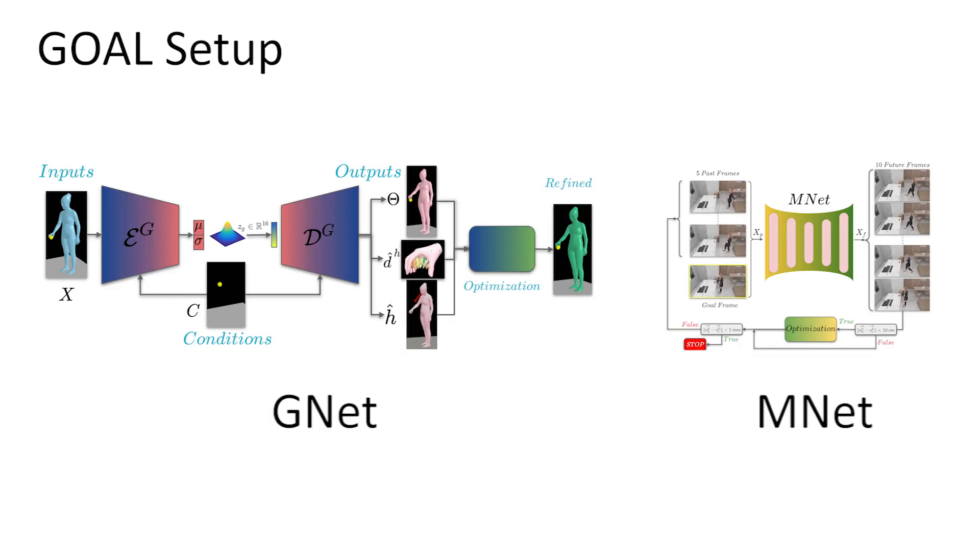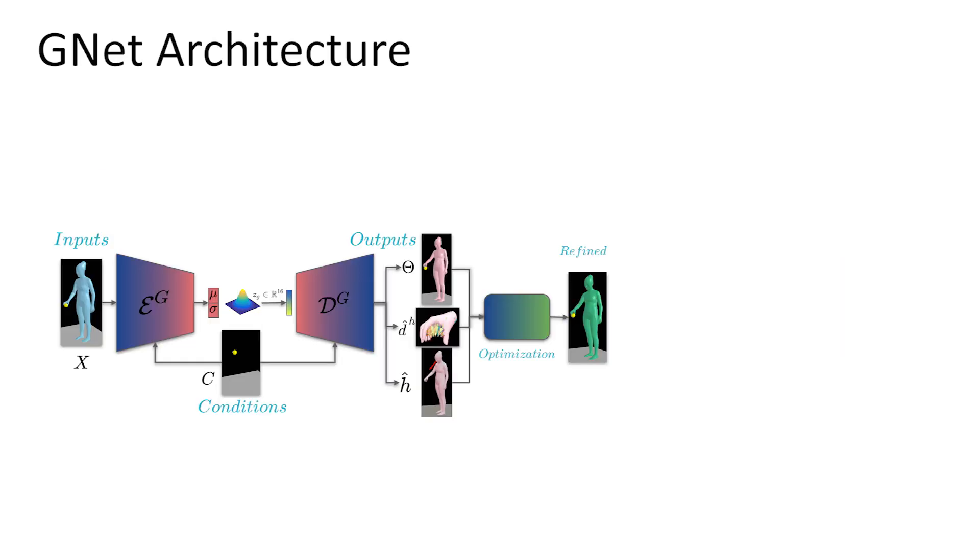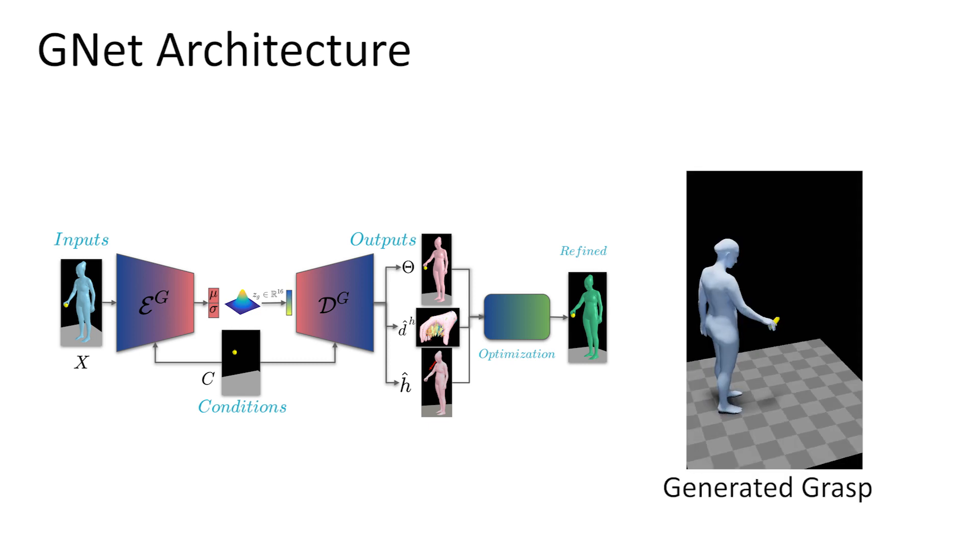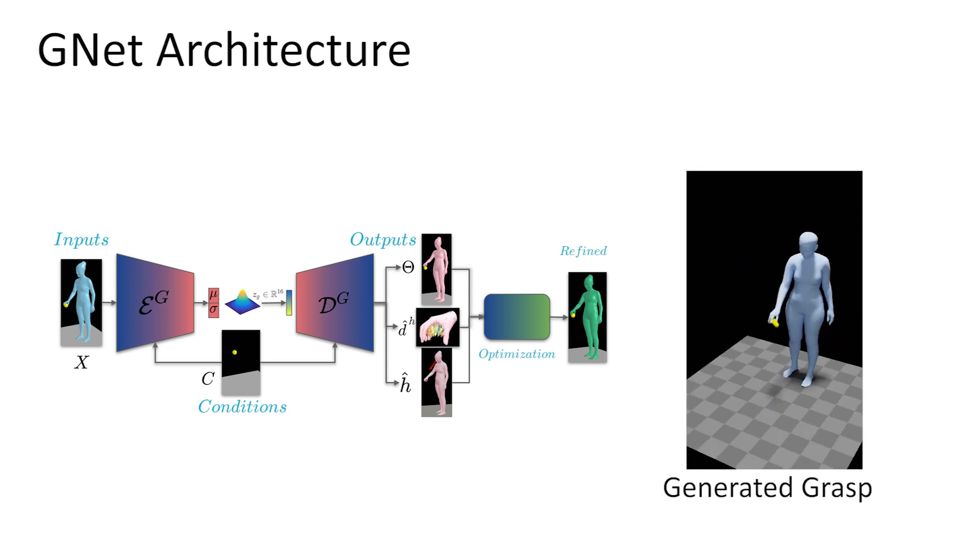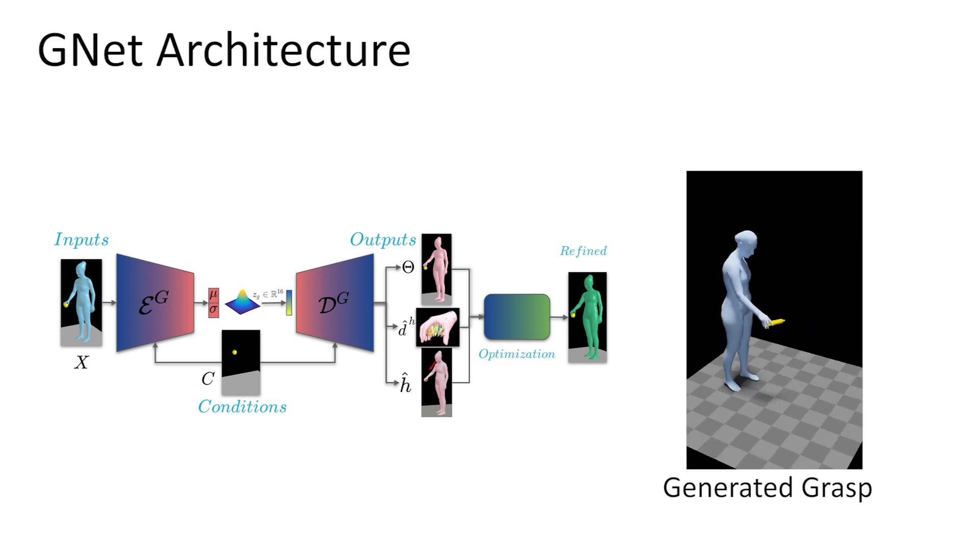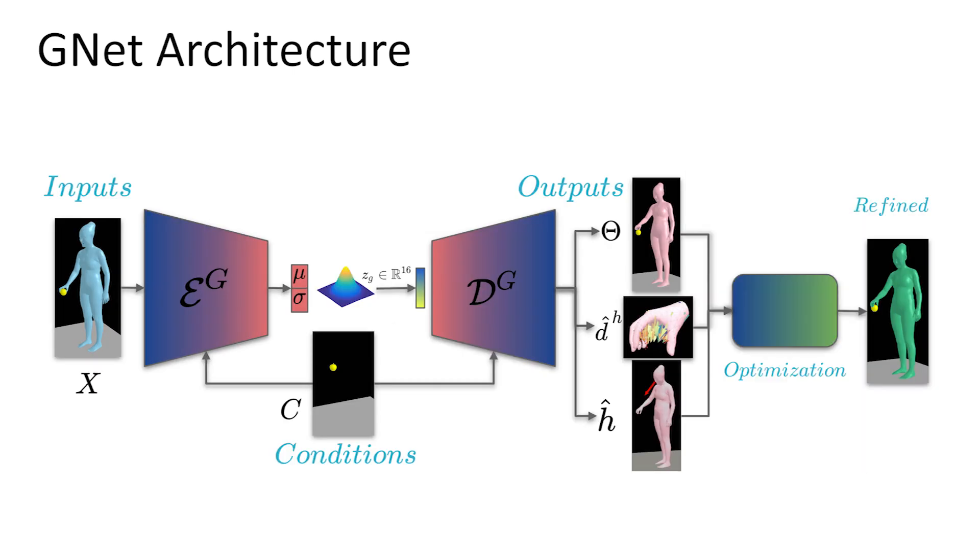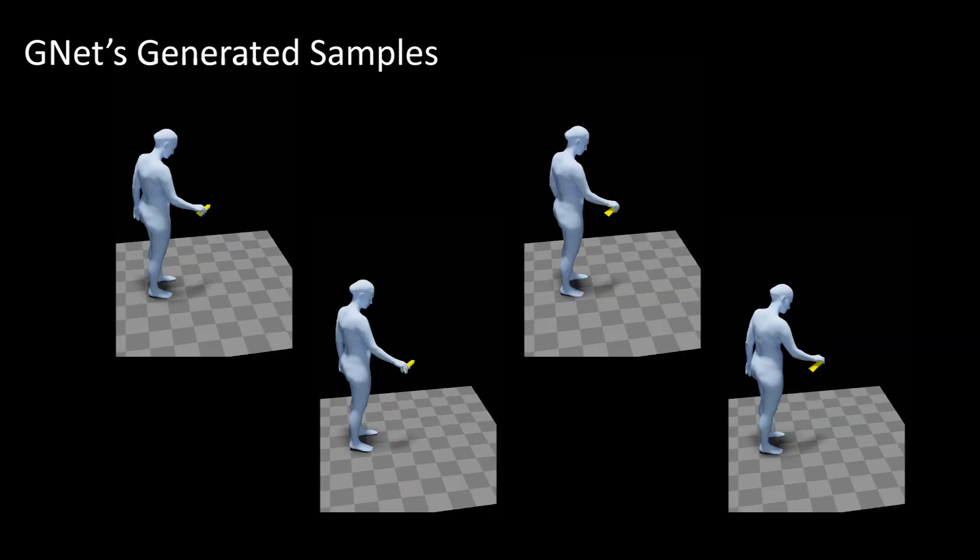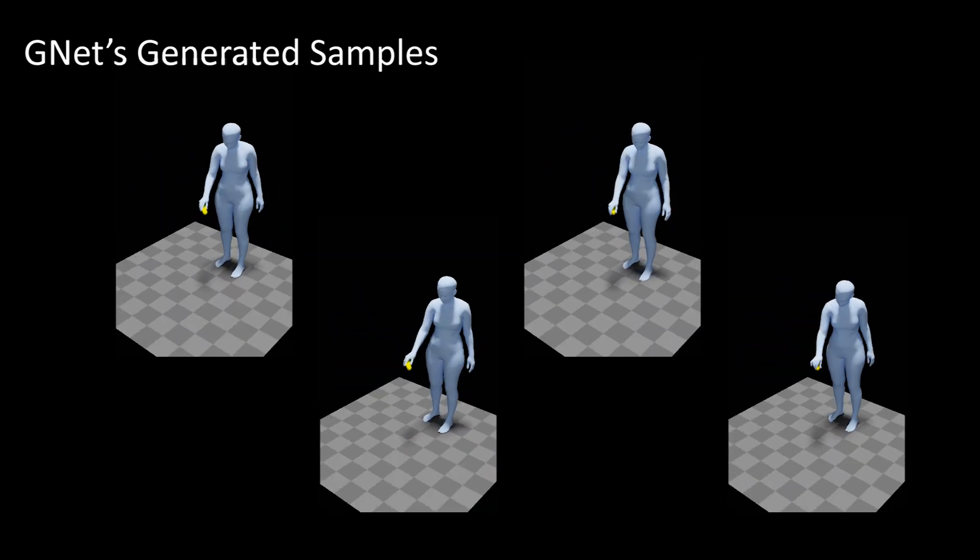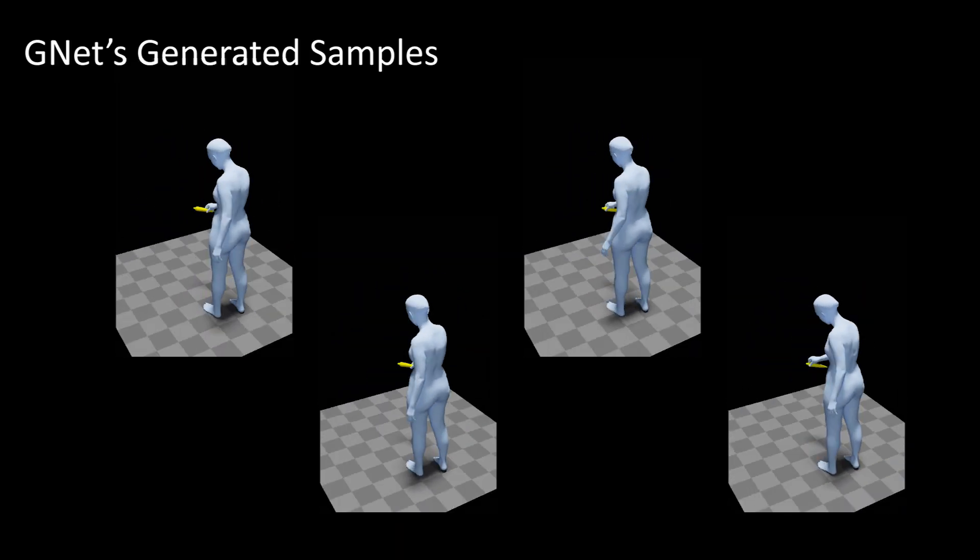For this, it uses two novel networks, GNet and MNet. First, GNet generates a goal whole-body grasp with a realistic pose for the body, head, arm, and hands, such that the hand-object contact is realistic. GNet is formulated as a conditional variational autoencoder to generate many different whole-body grasps by sampling from its latent space.